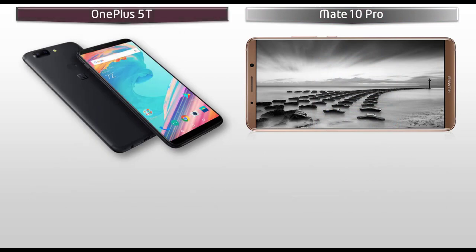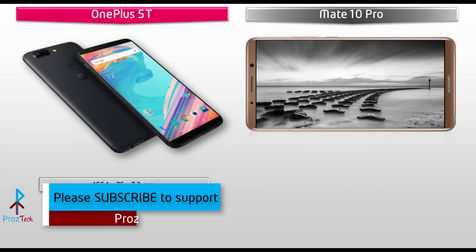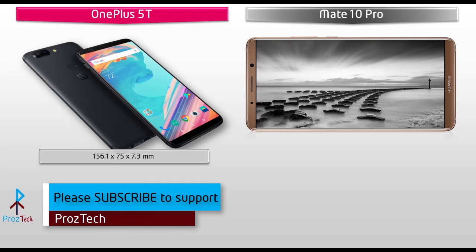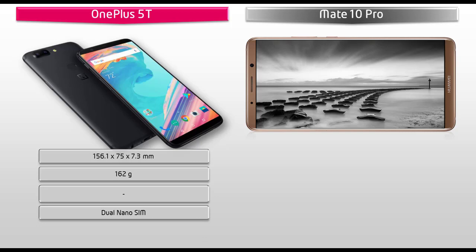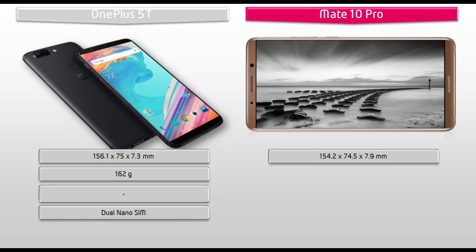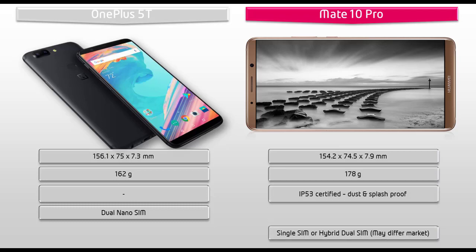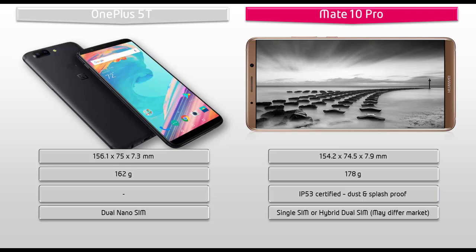If we talk about the dimensions of the OnePlus 5T, it comes with 156.1 x 75 x 7.3 mm thickness and weighs 162 grams with dual nano SIM standby support. Whereas the Huawei Mate 10 Pro is 154.2 x 74.5 x 7.9 mm in thickness, weighing 178 grams with single and hybrid dual SIM support. This phone is also IP53 certified, dust and splash proof.